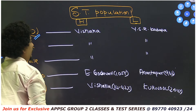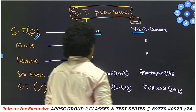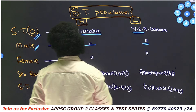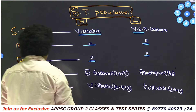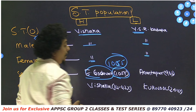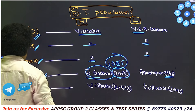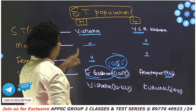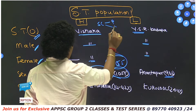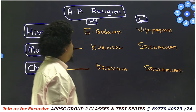SC percentage of population: lowest is Visakhapatnam. For ST population overall: Visakhapatnam has the highest ST population in numbers; YSR Kadapa has the lowest. ST male population: highest Visakhapatnam, lowest YSR Kadapa. ST female population: highest Visakhapatnam, lowest YSR Kadapa. ST sex ratio: highest East Godavari at 1,055, lowest Anantapur at 962. ST percentage of population: highest Visakhapatnam, lowest Kurnool district.